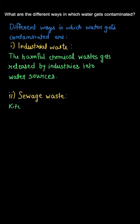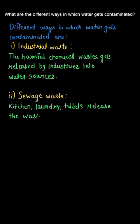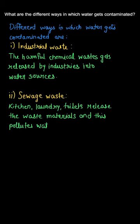The second is sewage waste. Sewage waste refers to waste which we use in our daily lives — for example, kitchen waste, laundry, toilet waste, and other waste which we throw into dustbins — which ends up polluting the water. Those are the sewage waste.